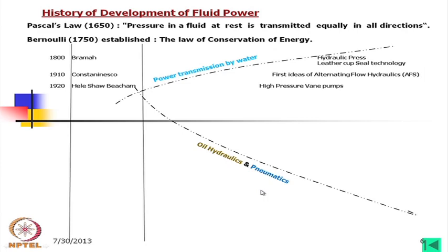In 1920, Halley-Shaw-Wacken developed high pressure vane pumps. Then in 1930, Thomas Doughty developed synthetic rubber seals and industrialized that seal technology. In fact, in fluid power — being a high pressure technology — the main problem was leakage apart from other technical problems. When synthetic rubber seals were invented by Thomas Doughty, it actually revolutionized the fluid power systems.